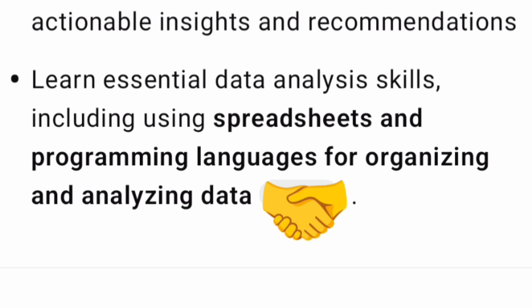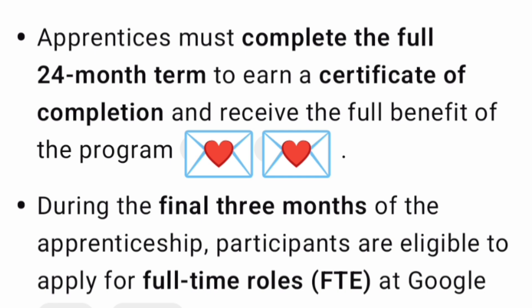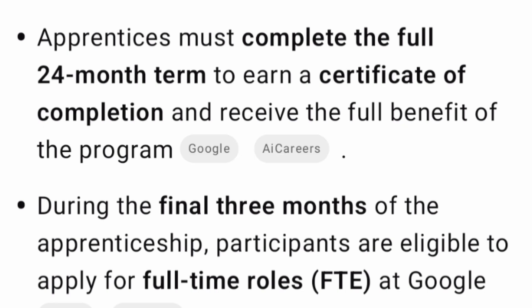You should learn essential data analysis skills — any required knowledge about spreadsheets or programming languages for organizing and analyzing data — using the 20% training time provided. You can also pursue any other certification required to complete the apprenticeship and increase your knowledge. Apprentices must complete the full 24 months to earn a certificate. Good news: in the last three months, you can apply for full-time executive roles, with a minimum package of around 40 to 50 lakhs as a Google full-time employee.